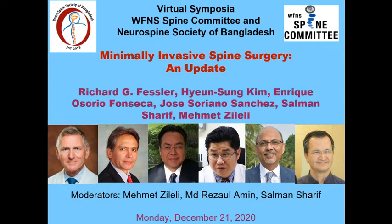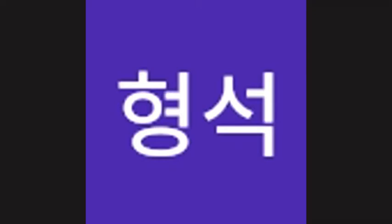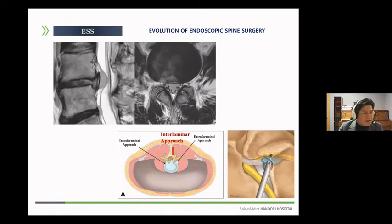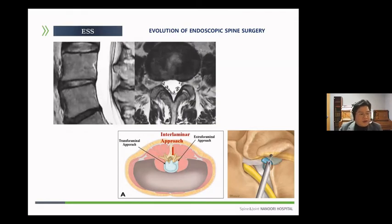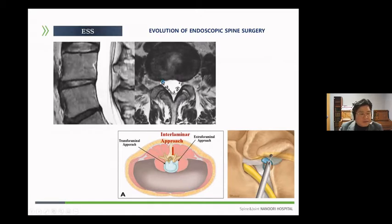Thank you so much for joining us. While performing endoscopic spine surgery, we should always keep in mind what is the ultimate goal. As we can see in these pictures, the ultimate purpose of endoscopic spine surgery is to effectively treat the symptomatic pathology that causes symptoms, while preserving the functional segment structures.